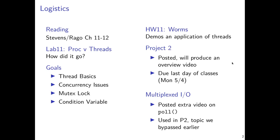One of the techniques used in Project 2 is so-called multiplexed I/O, in which a process has to read from potentially multiple sources and avoid blocking on any of them, as another may become available first. The poll system call is useful for this and is a fairly common one to use in modern systems.